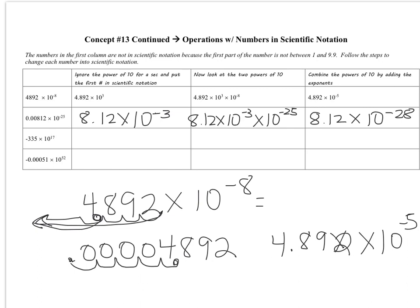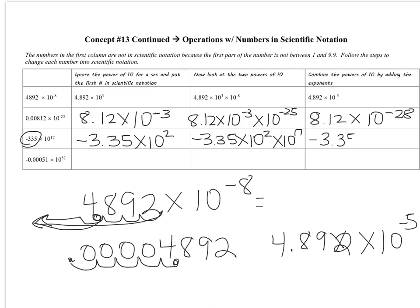Negative 335 times 10 to the 17th: look at negative 335 — that's negative 3.35 times 10 to the 2nd. Tack on the times 10 to the 17th. Since the bases are both 10, add the exponents: 2 plus 17 gives a final answer of negative 3.35 times 10 to the 19th.